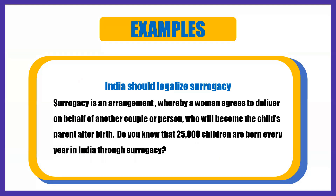Here I can say: Surrogacy is an arrangement whereby a woman agrees to deliver a child on behalf of another couple or persons, who will become the child's parents after birth. Then I can put forward a factual question: Do you know that 25,000 children are born every year in India through surrogacy? In this way, I am putting a thought into the mind of the other group members with a rhetorical question, to which I will also give the answer. I can then talk about how Indian people have changed their mindset, and how people are becoming more broad-minded, getting the opportunity to have children through surrogacy. Having said this, I can come forward with my opinion and encourage the other members to be a part of the group discussion.